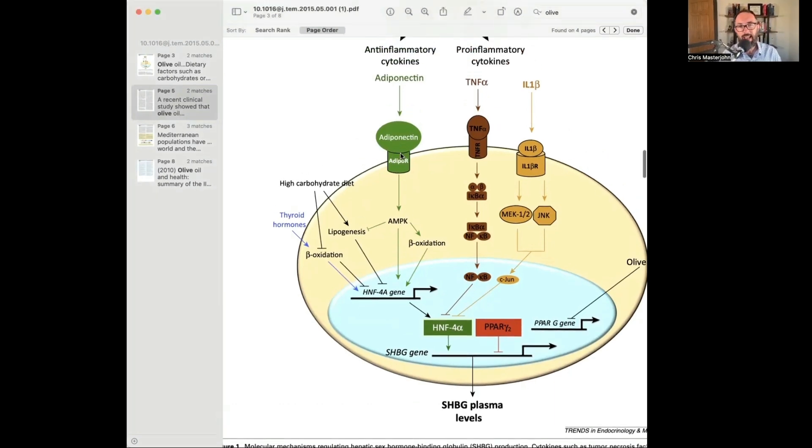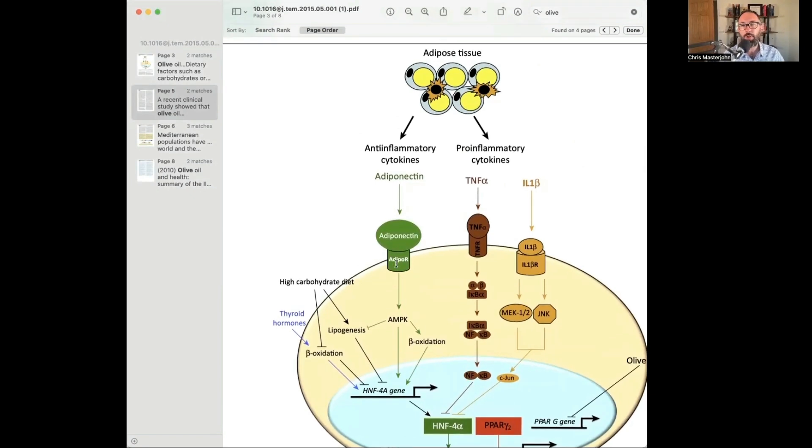Also here is that adiponectin translates into this positively. Now adiponectin is produced by adipose tissue that is insulin sensitive. And so one of the things you want for more adiponectin is to be lean, which is another play into this. Obesity is associated with low SHBG.